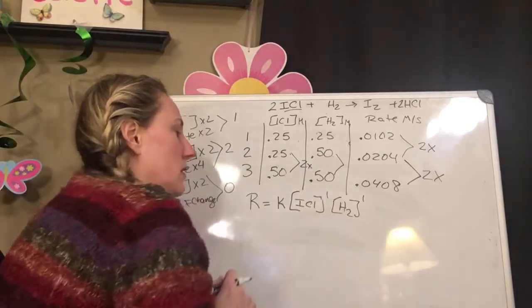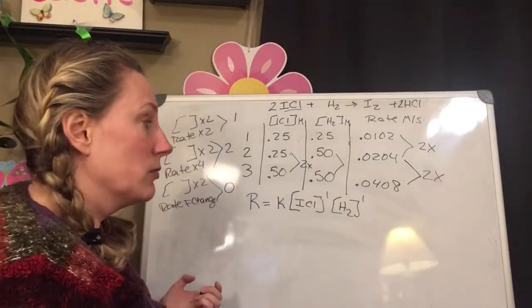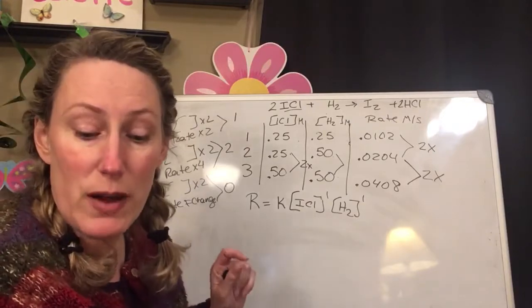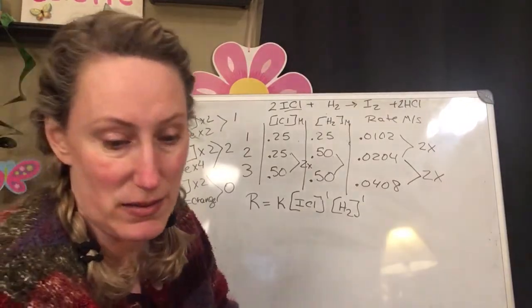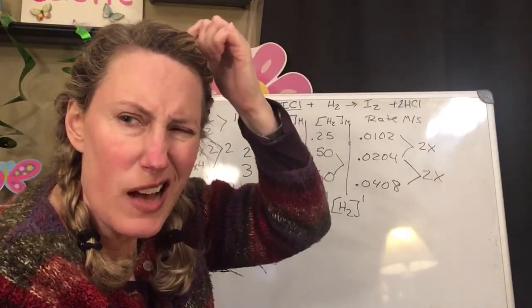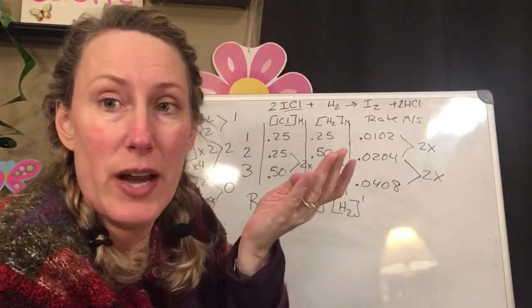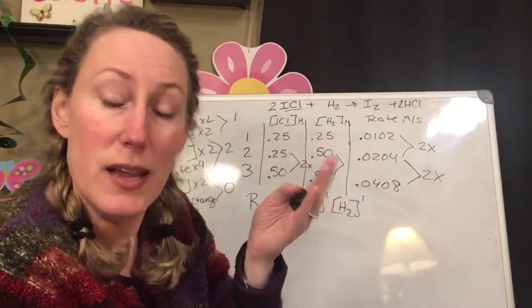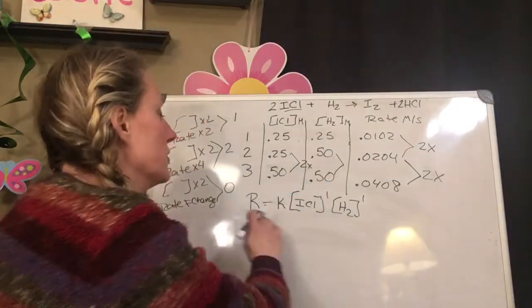So now we know our exponents. So now once I know my exponents, I'm going to figure out what my k is. So how I do that is I pick one of my trials. It doesn't matter which one, but I just need to pick one. And I put those numbers in to this.